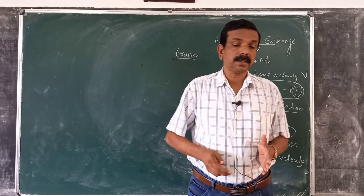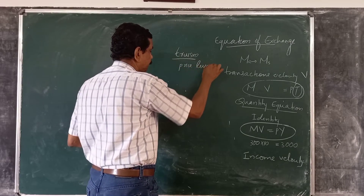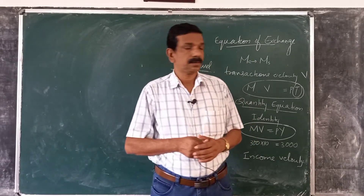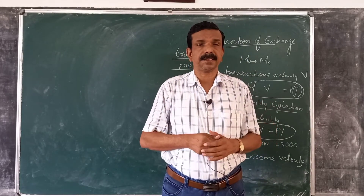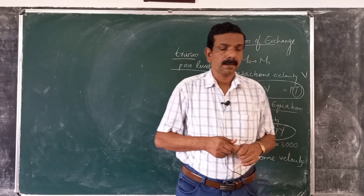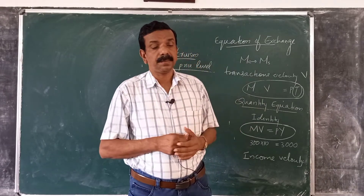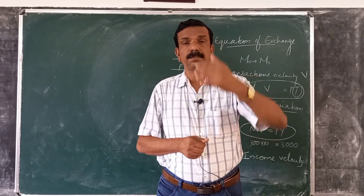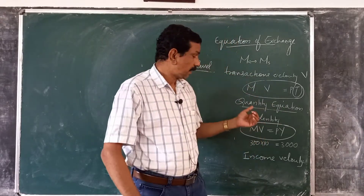Fischer argued that the equation of exchange, once used to explain price level, tells us: V, the velocity, is determined by payment habits and payment technology in society — such as the average length of the pay period and the use of ATMs — which affect the velocity of circulation.